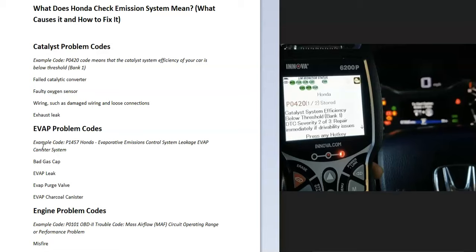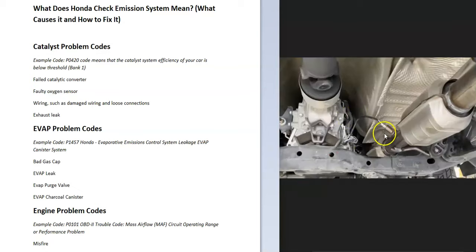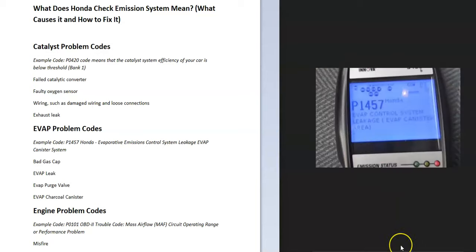For example, if you get a P0420 code, this points to a catalyst problem — something to do with the catalytic converter, an oxygen sensor, the wiring going to the oxygen sensor, or possibly an exhaust leak. Once you know this is the problem, you can test the oxygen sensor, test the catalytic converter, or run catalytic converter cleaner through it and see if that clears the code.